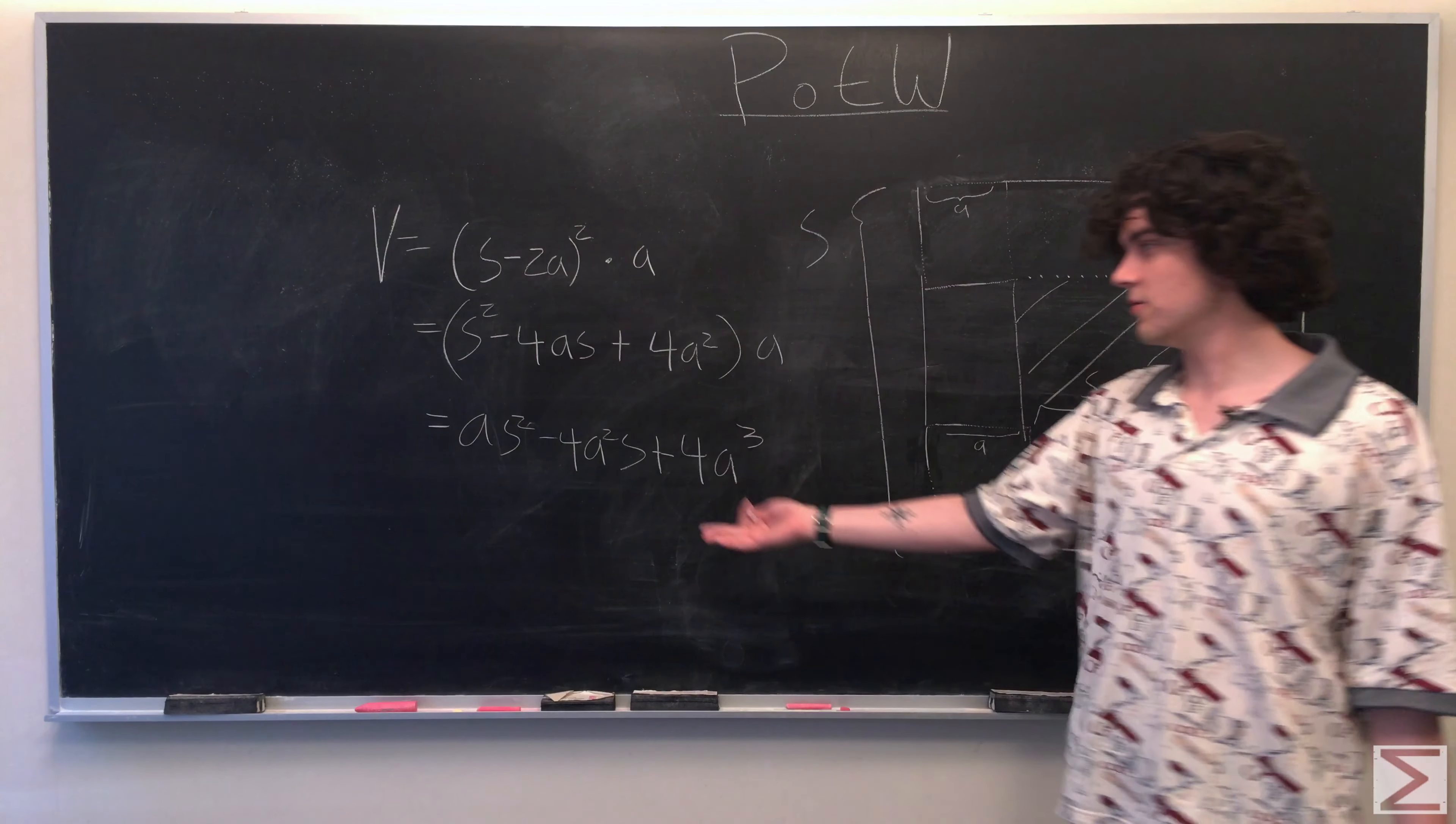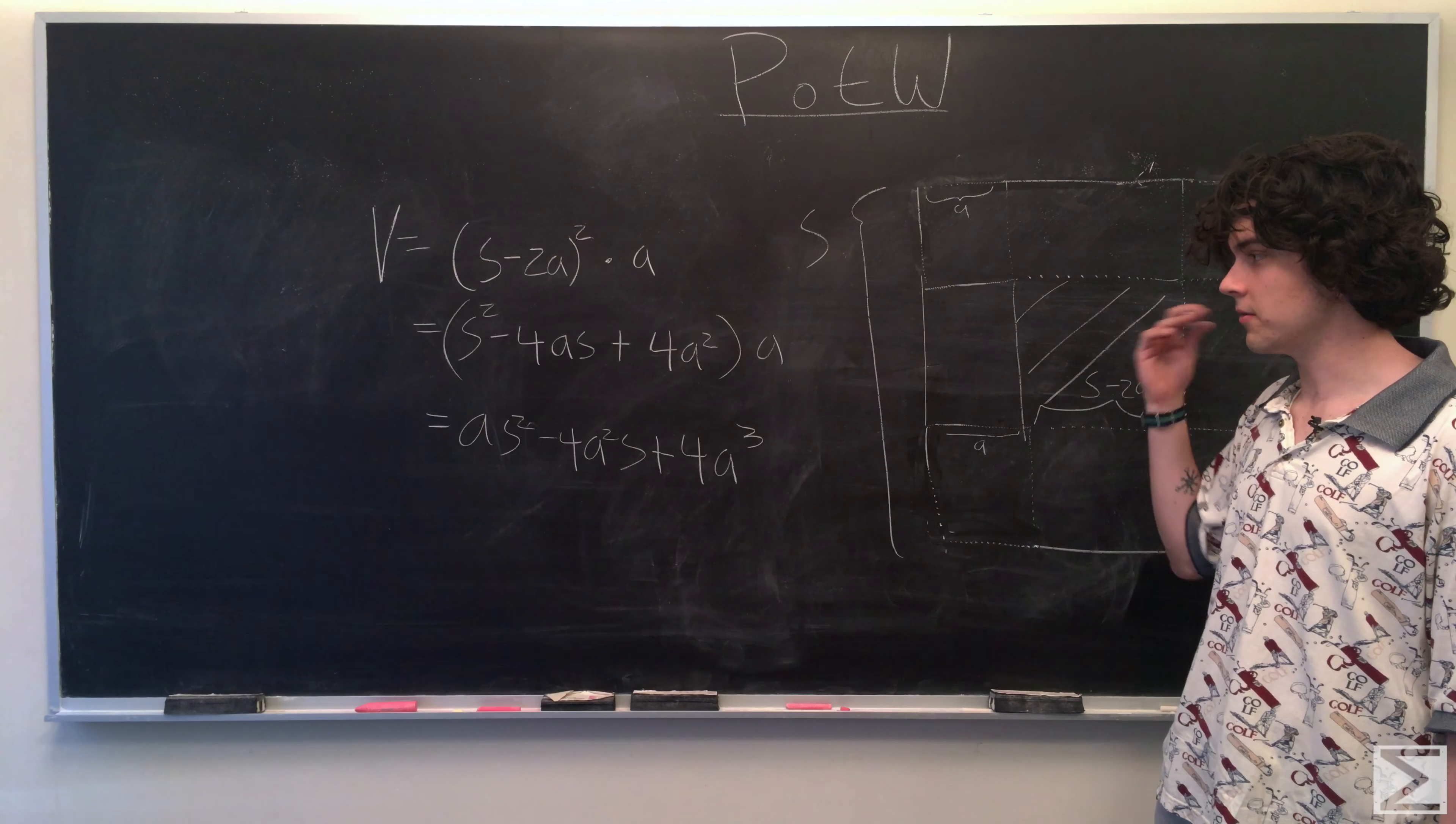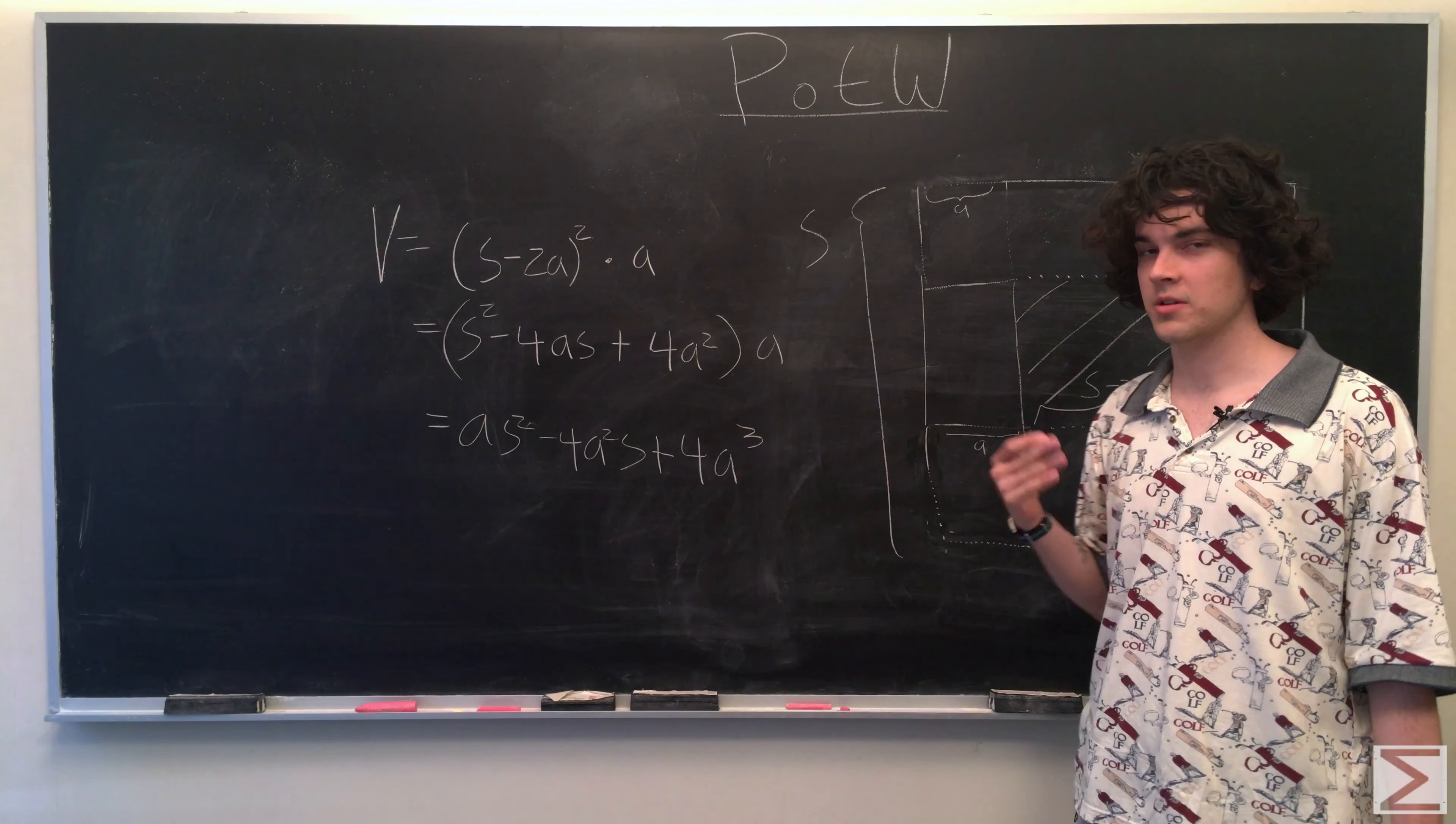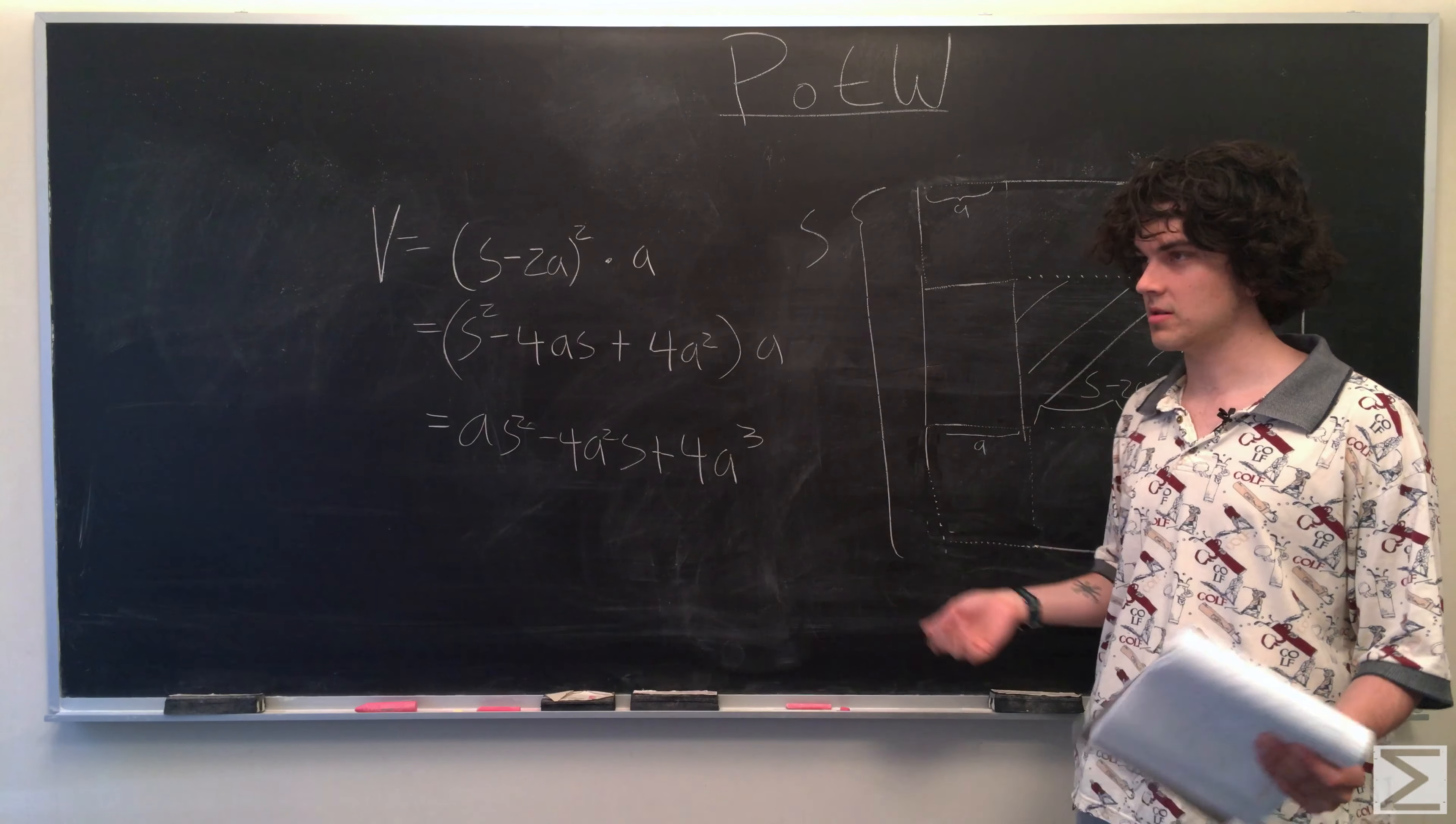And this is the volume of the box based on what the side length, which is A of the square you choose to cut out of the corners and the S. And what's really going to change the volume is what you choose for A. We're looking for the maximal strategy. So that's going to change it according to how you choose A. But just choosing S is just going to scale the volume.